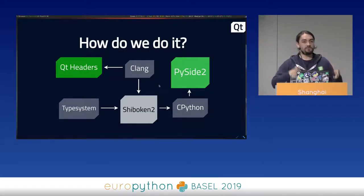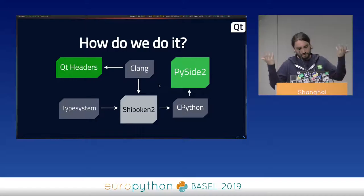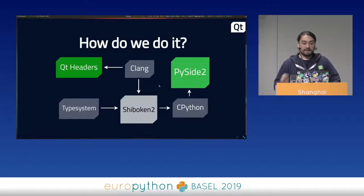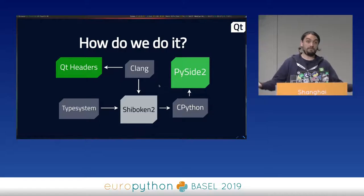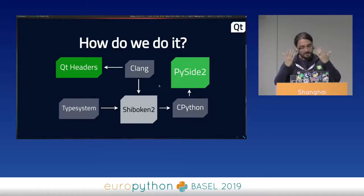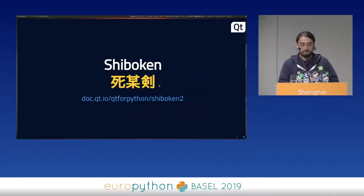The important part is: how did they do it? This tool called Shiboken2 is the code generator they wrote to expose the huge C++ framework to Python. There's a module inside that extracts all the API information from Qt — based on Clang, of course, because if you want to do smart things in C++ you need Clang. Then there's a type system which is an XML file where you can define things like ownership, or what to do if a function has a void* argument in Python.